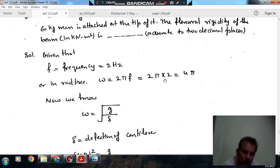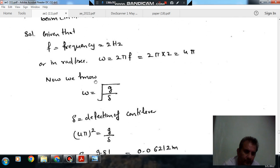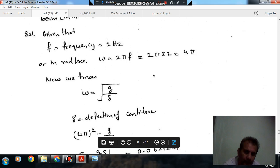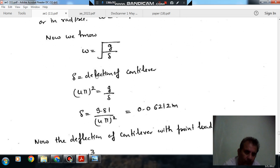We know that the angular frequency in terms of radians is square root of g by deflection. So omega equals square root of g by deflection. So 4 pi squared will be equal to g by deflection. So deflection will be 0.06212 meter.